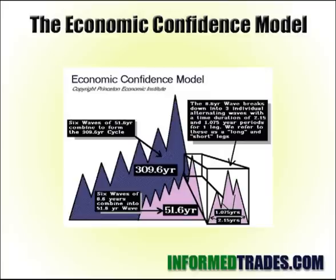These cycles are part of what Armstrong calls the economic confidence model. Basically, the idea is that every 8.6 years there's a concentration of capital and a panic of some type, perhaps a small one. The 8.6-year cycle can be broken down into three individual alternating waves with time durations of 2.15 and 1.075 periods.